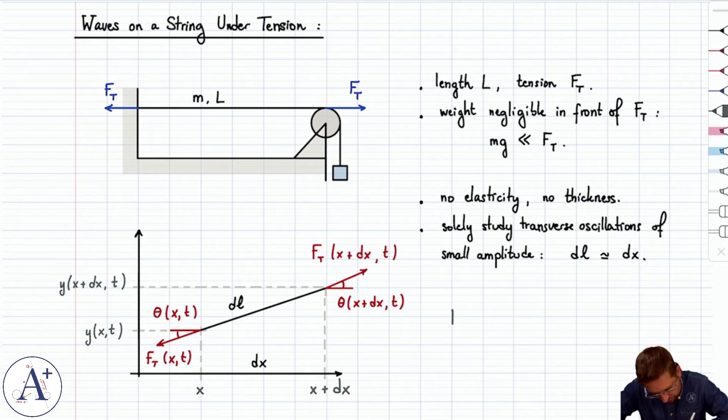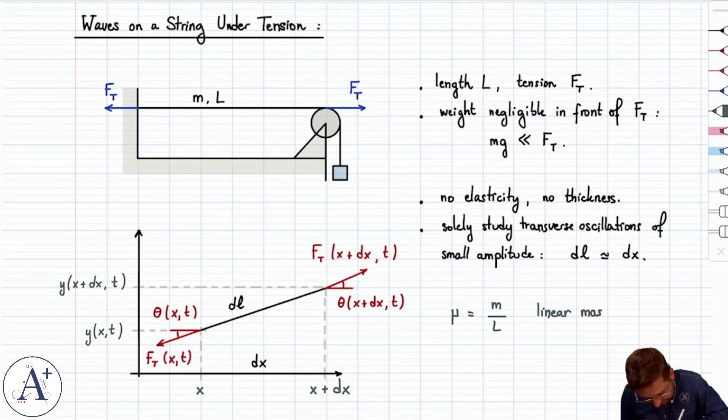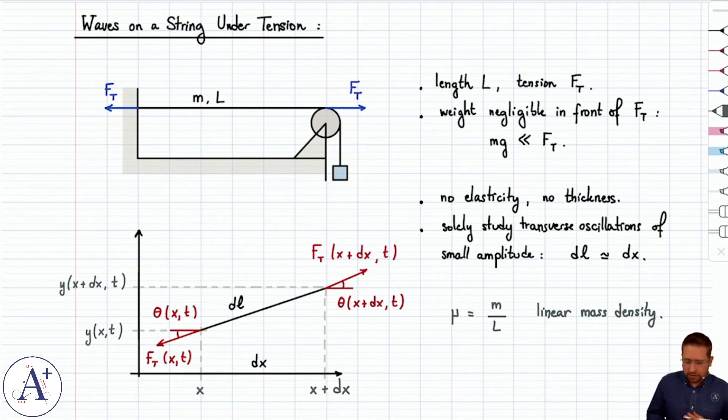First things first, we're going to introduce μ, which is going to be the linear mass density of the string. It's mass over length, and it will assume that it's constant, in other words, that the mass is uniformly distributed throughout the string. Sometimes it's called lambda in other chapters, like gravitation. Not a very good name because lambda is wavelength, so we'll use μ.